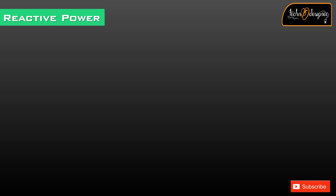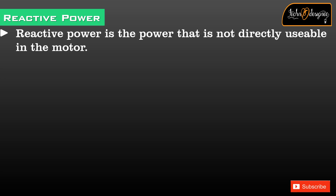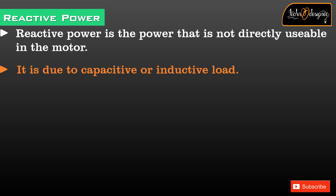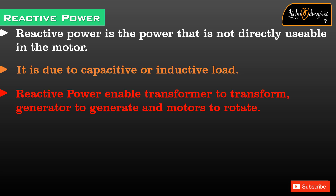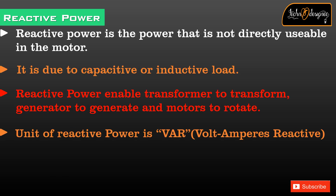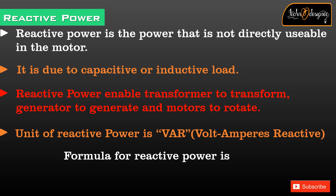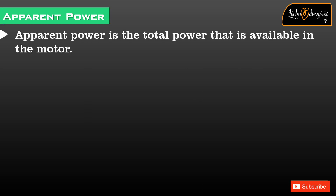Reactive power is the power that is not directly usable in the motor. It is due to capacitive or inductive load. Reactive power enables transformers to transform, generators to generate, and motors to rotate. The unit of reactive power is VAR (volt amperes reactive), and the formula is Q = S sin α.